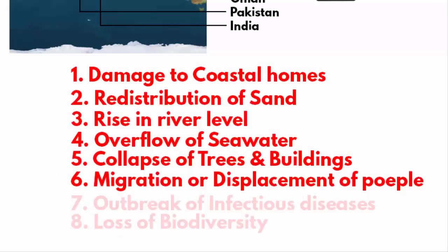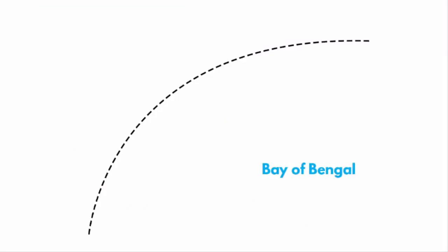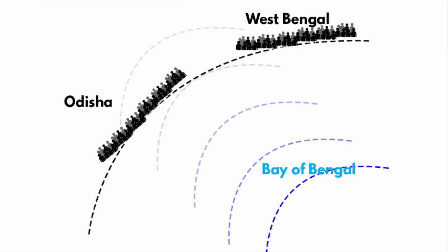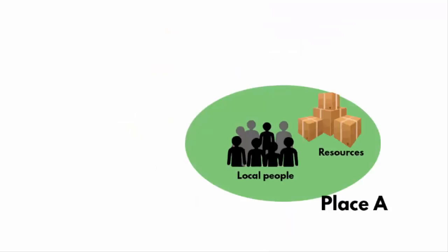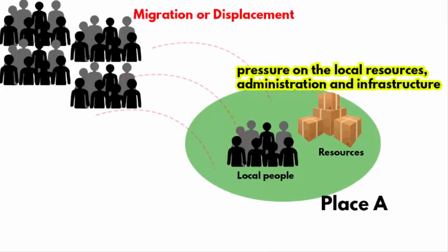The sixth impact is migration or displacement of people. The NDRF evacuated around 20 lakh people from the coastal districts of West Bengal and Odisha to shelter homes. Keep in mind the country is currently under lockdown, and many shelter homes are already packed with people under quarantine. This leads to large gatherings against social distancing. Large-scale population displacement puts pressure on local resources, administration, and infrastructure.